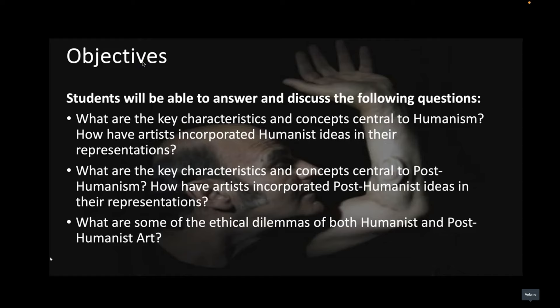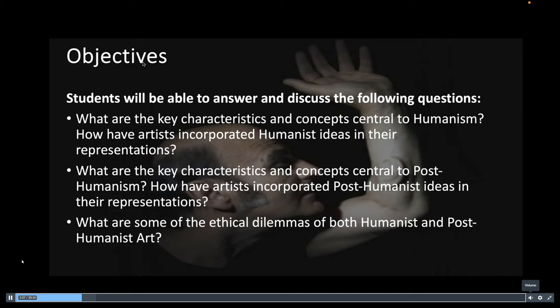Today's learning objectives: students will be able to answer and discuss the key characteristics and concepts central to humanism, how artists have incorporated these ideas in their representations, and the same for post-humanism — how it goes beyond humanism. We'll compare humanist and post-humanist art, and discuss the ethical dilemmas that have existed historically in artworks engaging with both movements.